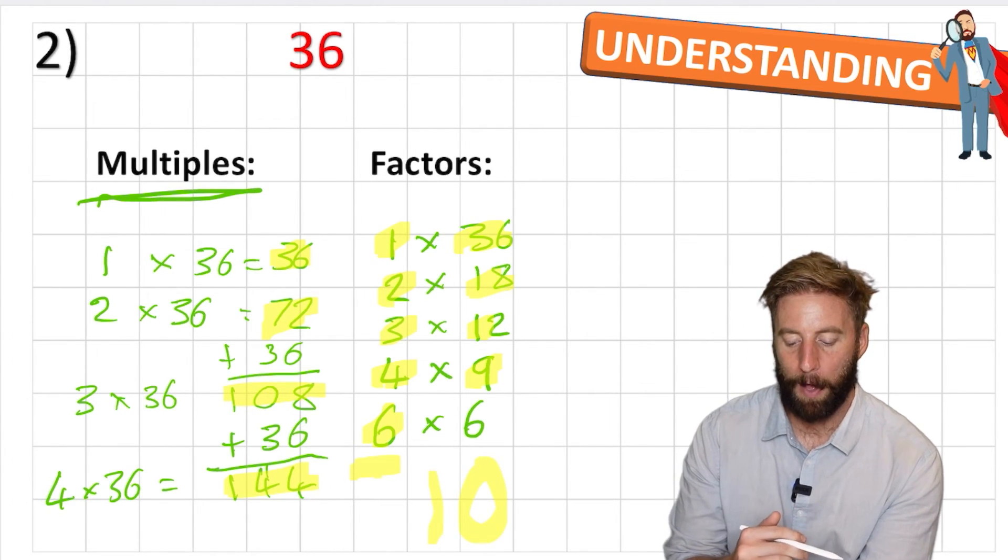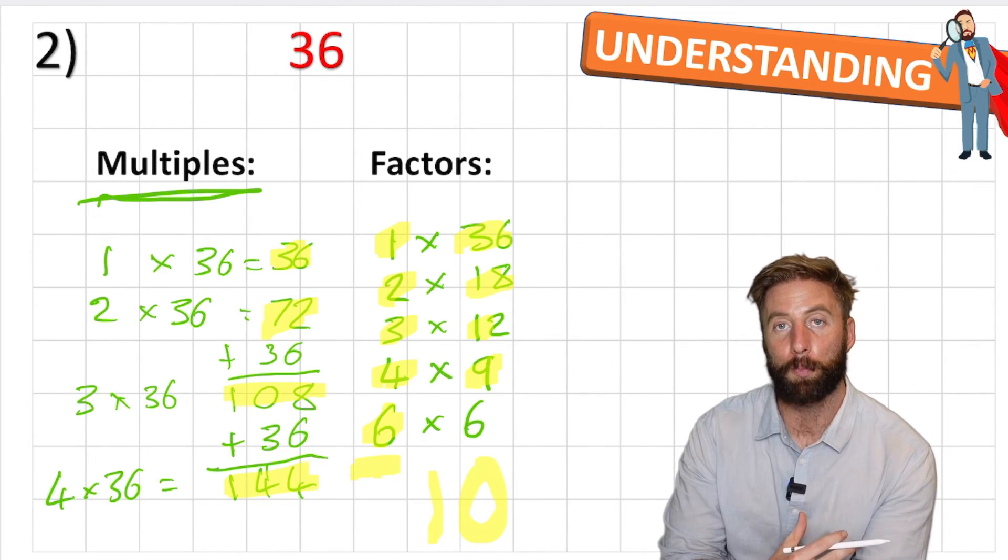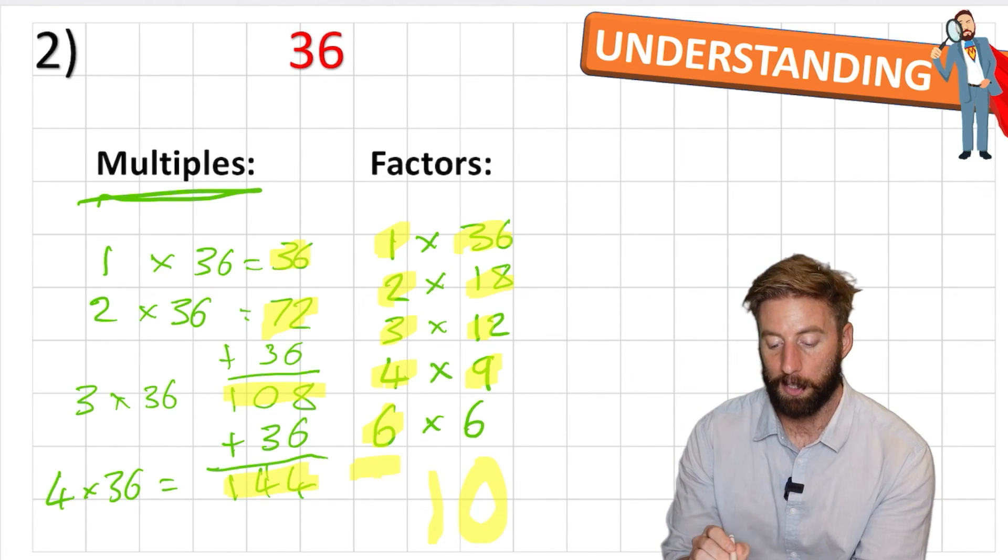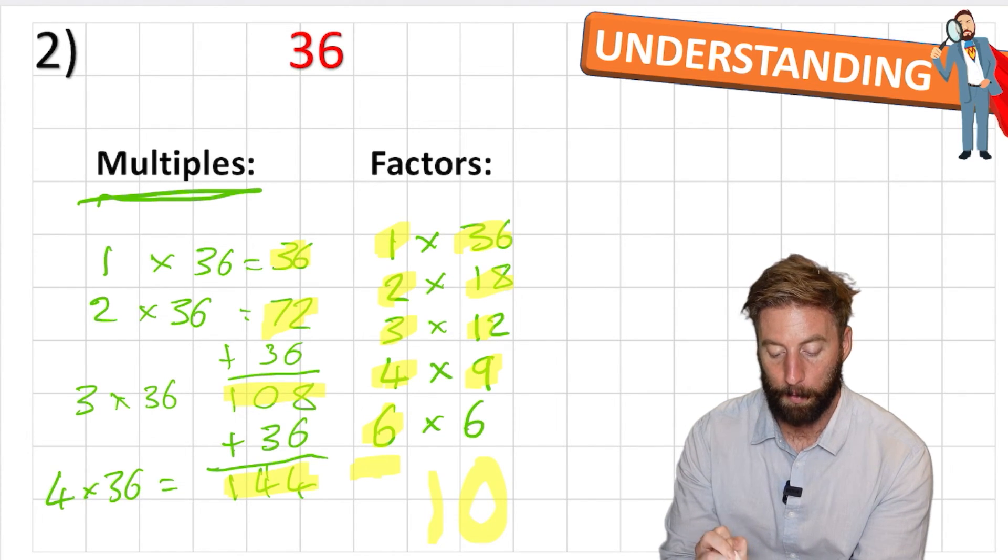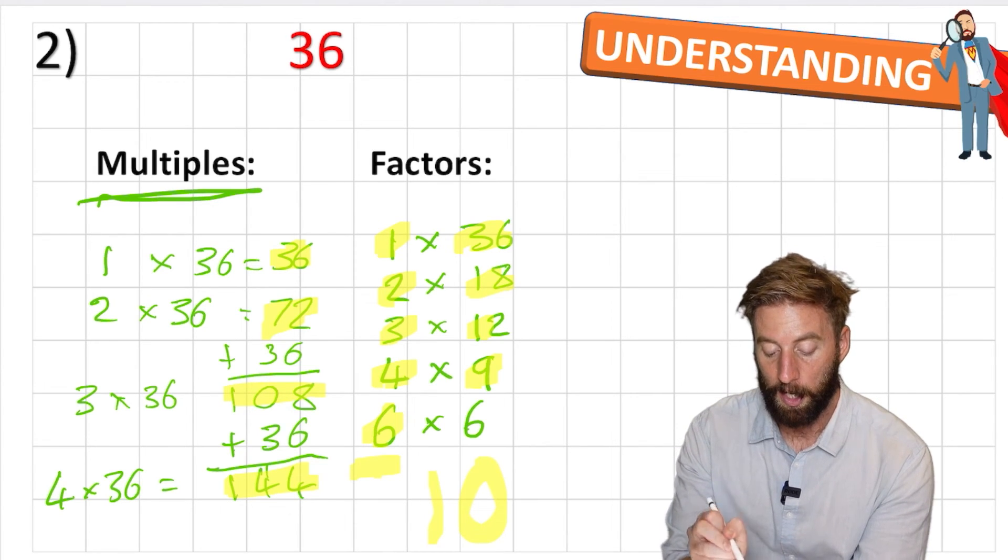Okay, so let's quickly think about what the difference is, again, between these two words, the multiples or the factors. Multiples are simply numbers that would come in that times table if we're going to just keep multiplying it by an integer.